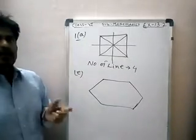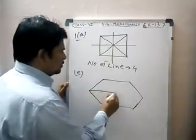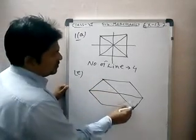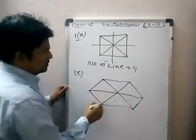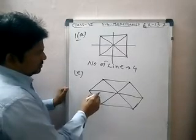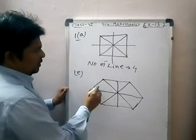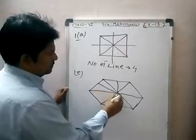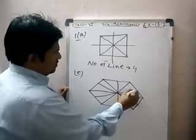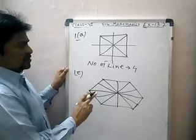For the hexagon, we draw the lines of symmetry. First, draw lines joining the vertices — first vertices, second vertices, third vertices. We draw all the lines. In total, we draw six lines.